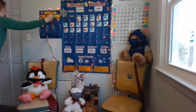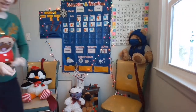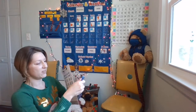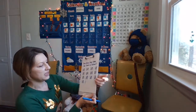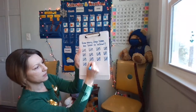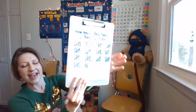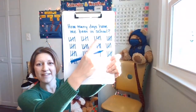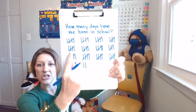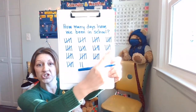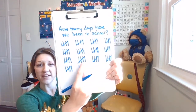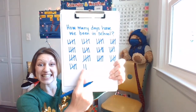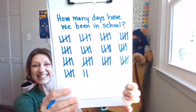Let's go ahead and do our tally mark. You're going to pull straight down for your tally mark. How many days have we been in school? 5, 10, 15, 20, 25, 30, 35, 40, 45, 50, 55, 60, 65, 66, 67.